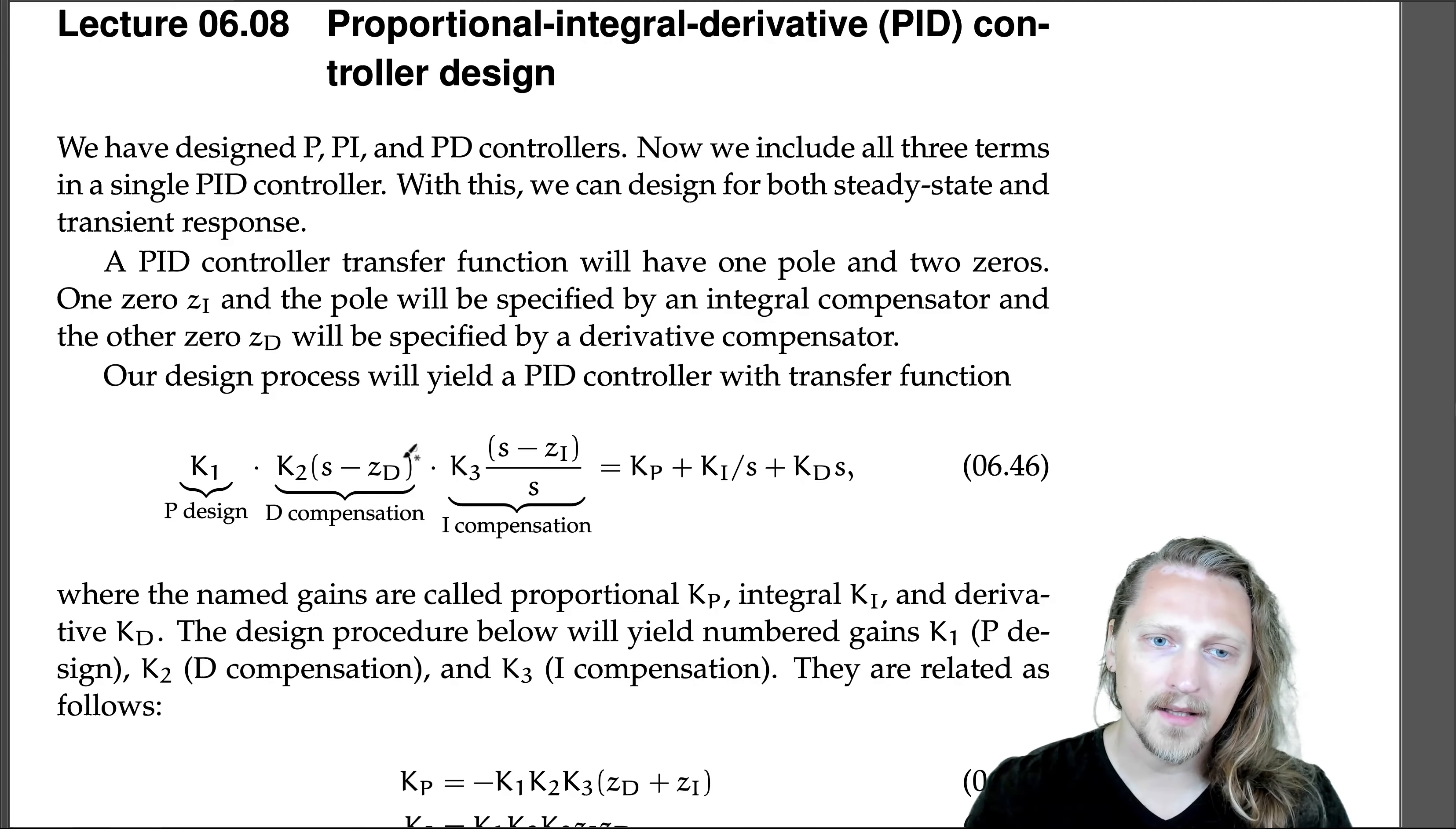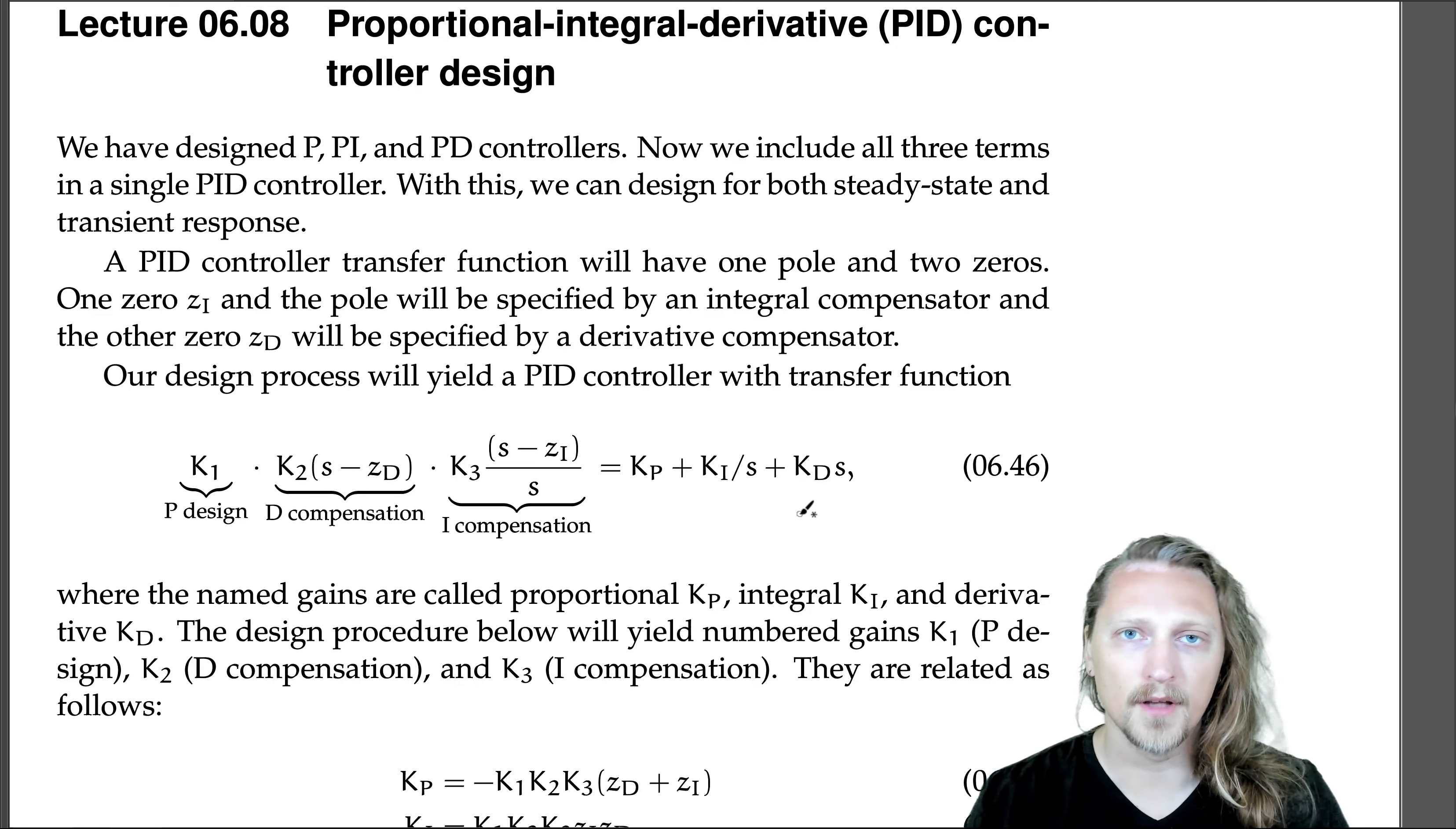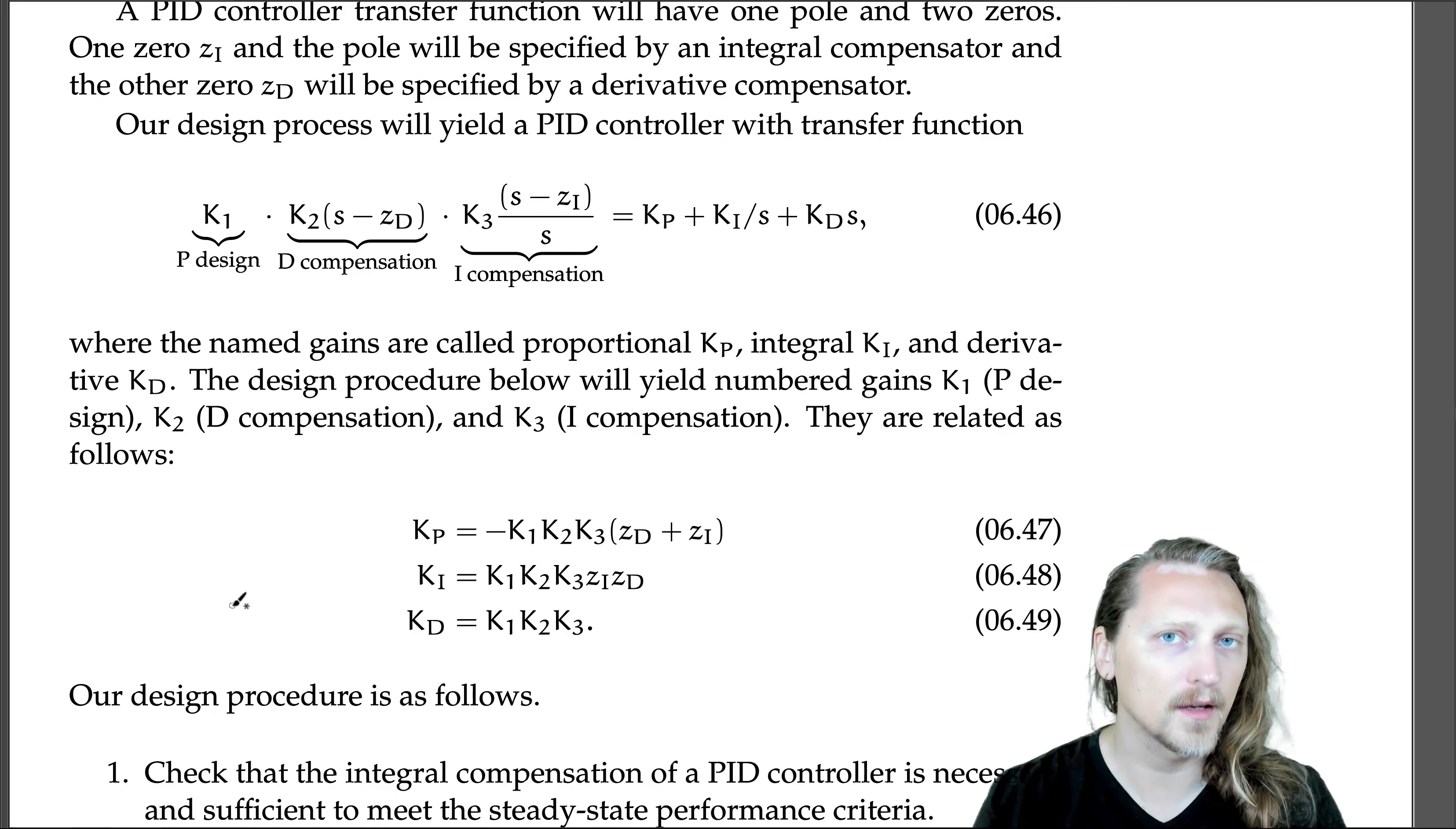If you combine these together, so this is what emerges from the design process, then you can rewrite this as a proportional gain, an integral gain, and a derivative gain. The design procedure below will yield numbered gains k1 from the P design, k2 from the D compensation, and k3 from the I compensation.